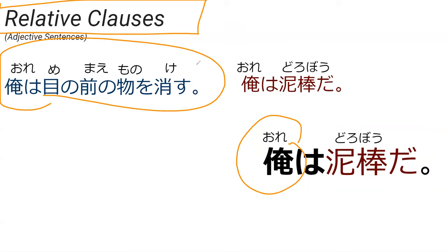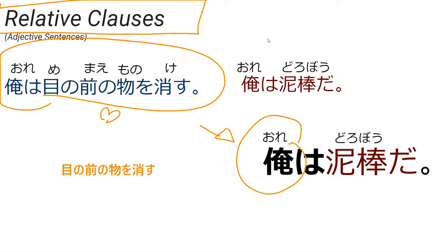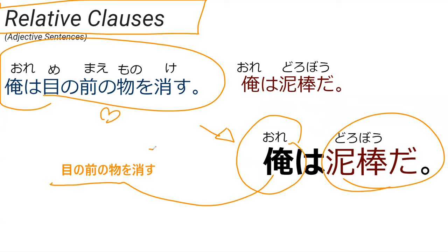So how could we add information to describe 俺はどろぼうだ? We can say 目の前のものを消す俺 — 'the I who will disappear things before your eyes is a thief.' You could also change the tense — 消した means 'I who already made something disappear, is a thief.' Or 消さない — 'I who do not make things disappear before your eyes, is a thief.'